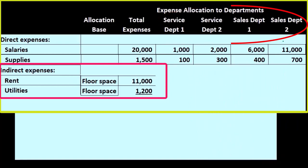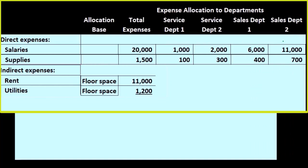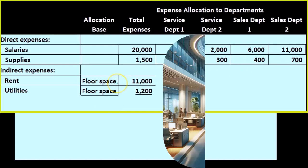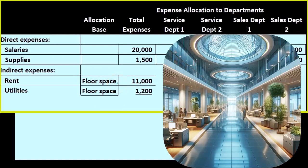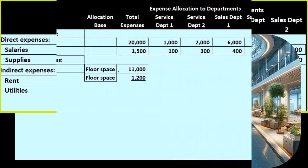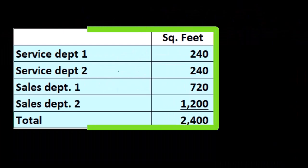Because these departments aren't the same size — which is most likely going to be the most common difference — we have to allocate based on size or based on some relevant activity. To do that, we use an activity base. That base we're going to use is floor space, which we would think is a reasonable ratio to help us allocate these expenses related to rent and utilities.